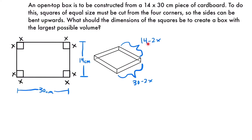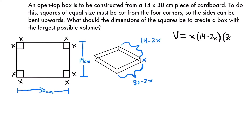We also need the height to find the volume. The flaps we fold up have the same width as the squares we cut out, so the height is x. Therefore, the volume of the box is length times width times height: V = x times (14 minus 2x) times (30 minus 2x).